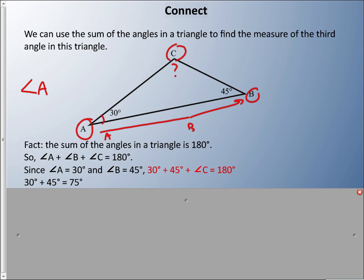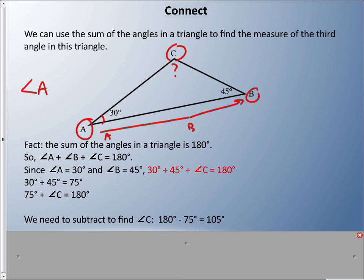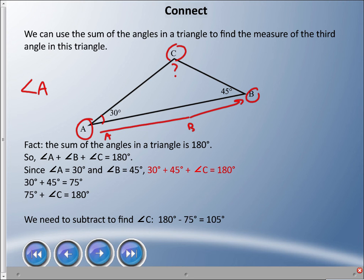So we know so far that angle A and B equal 75. So what we have to do is know that we've got to find out the remaining part. And so what we have to do is subtract. 180 minus 75 is 105 degrees. I know that angle C is 105 degrees.